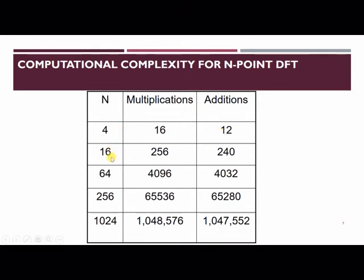In the same way for N equals 16, number of complex multiplications will be N², that is 16 squared, wherein the number of complex additions will be N times (N minus 1), that is 16 times 15 and that equals 240. So